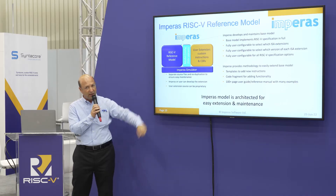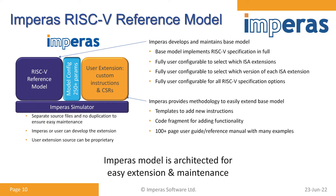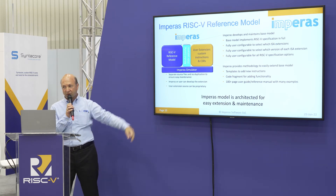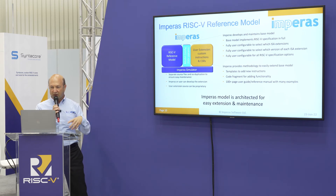This is the basic architecture of the processor model. There's a simulator engine, and on top of that sits the base reference model that supports the full RISC-V specification. There are now more than 250 different parameters in our model so that you can do anything you want within the RISC-V specification. For anything beyond that — custom instructions — that's where the extension library comes into play. This architecture ensures that the base reference model is as well-verified as possible for every configuration, and it's architected for easy extension and maintenance.